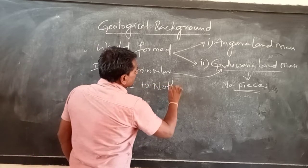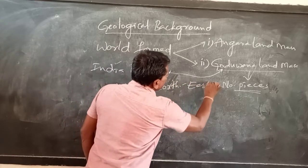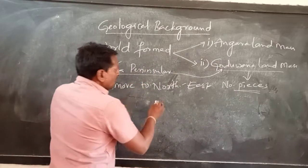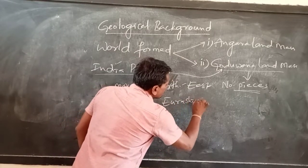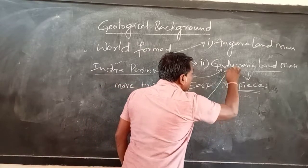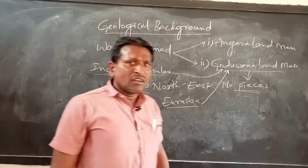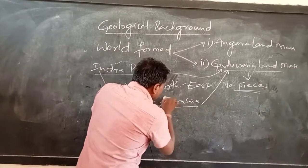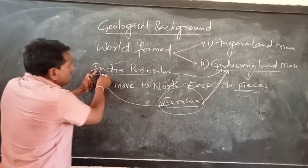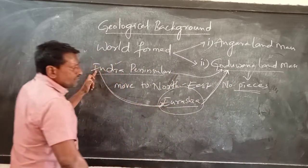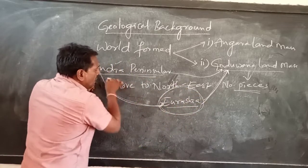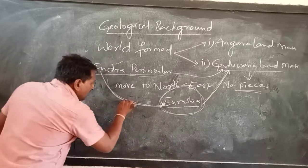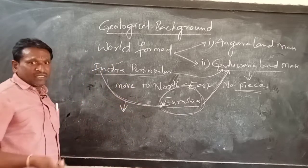The Indian peninsula moved to the northeast and crashed into Eurasia. Eurasia is also one of the parts of the Gondwana land masses. When the Indian peninsula crashed into Eurasia, this process happened over millions of years.